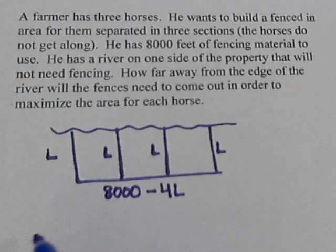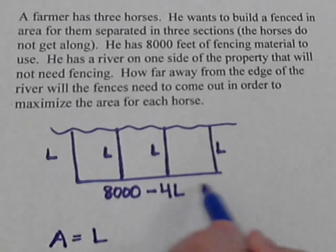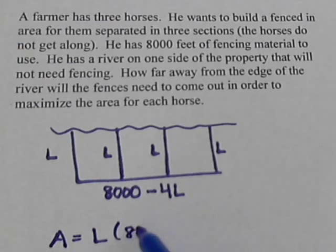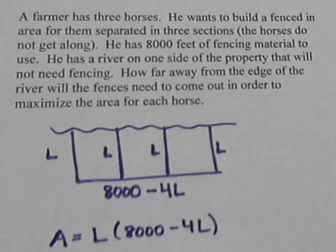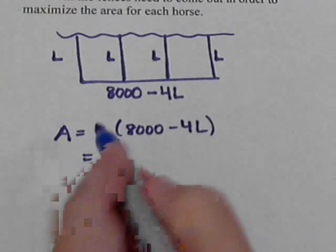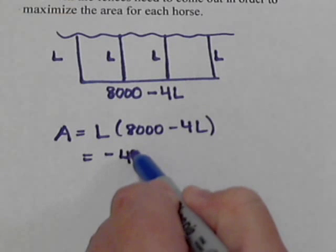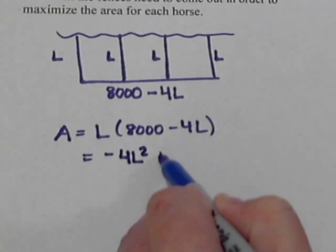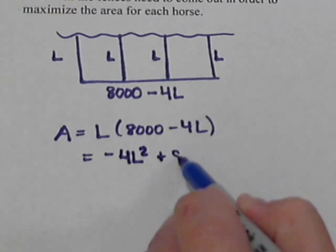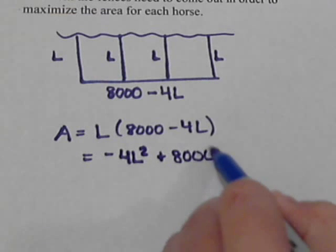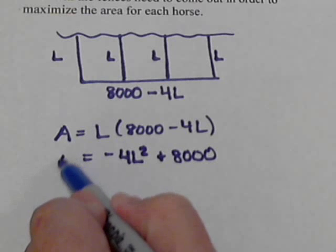So if we want to maximize the area, area is length times width. We multiply this out and rearrange L times negative 4L. That would give me negative 4L squared plus L times 8,000. So this gives us our area formula.